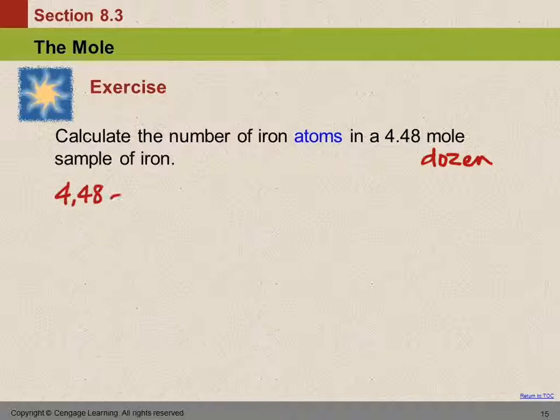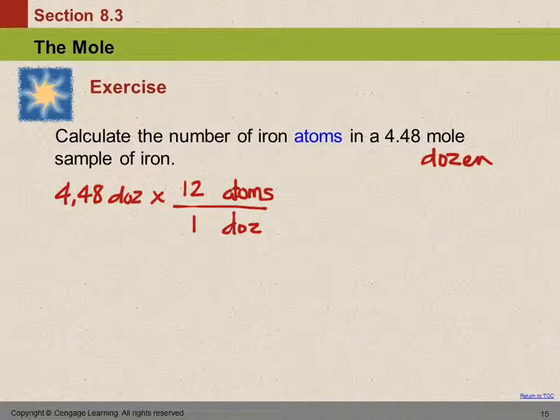Because that's a lot easier. So 4.48 dozen atoms. We want to put dozen on the bottom and number of atoms on the top. How many atoms in a dozen? You know this. How many atoms in a dozen? 12. Thank you. It doesn't matter that they're atoms. So 12 atoms in a dozen, because there's 12 anythings in a dozen of that thing.